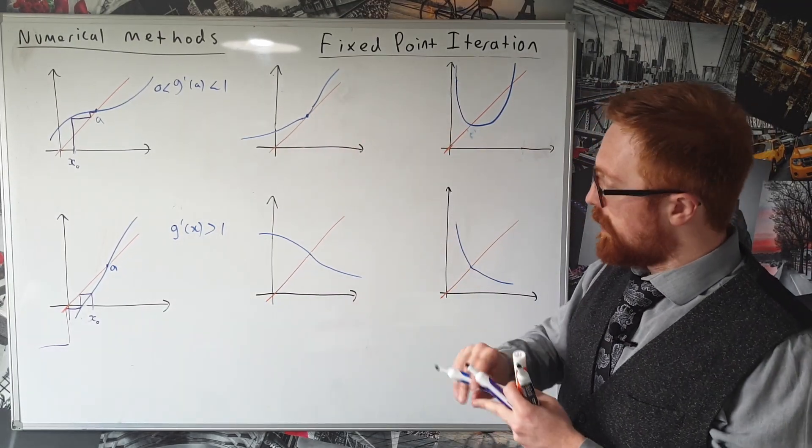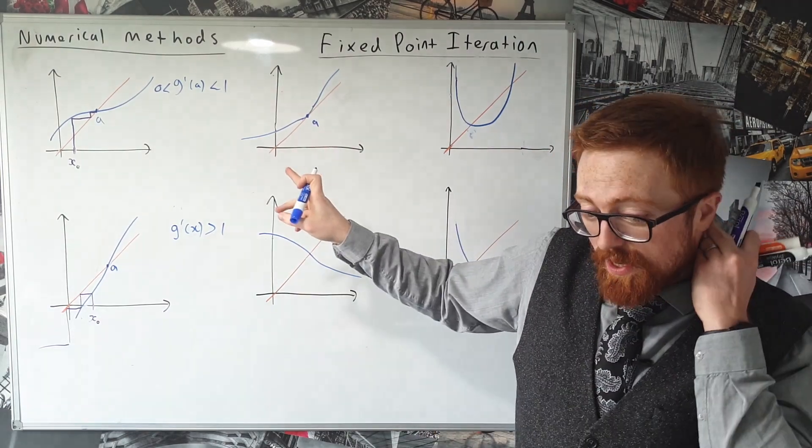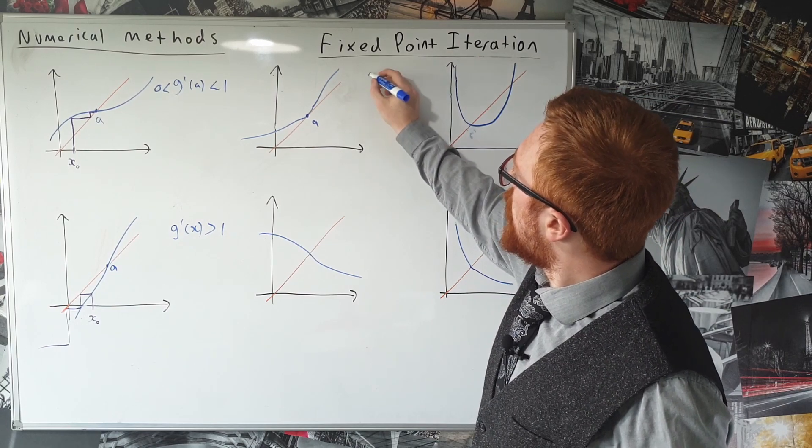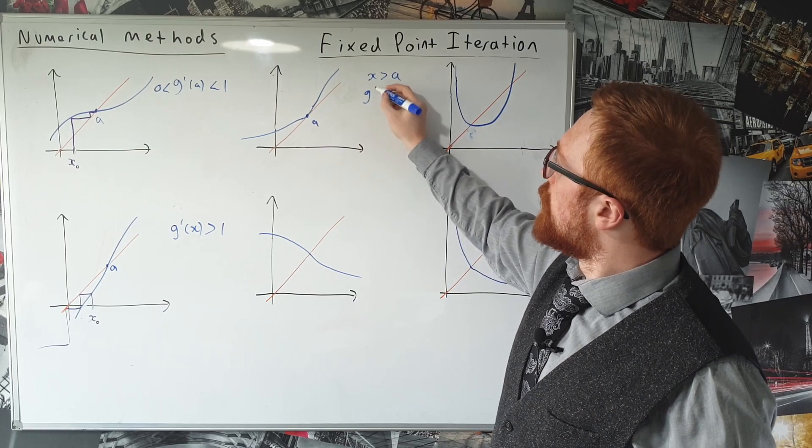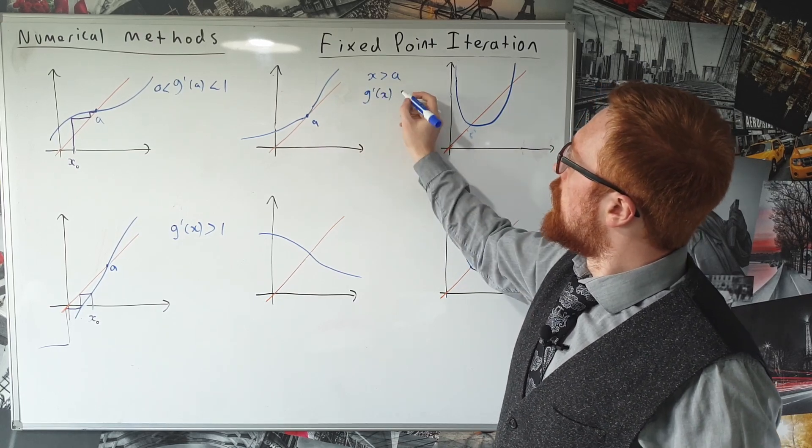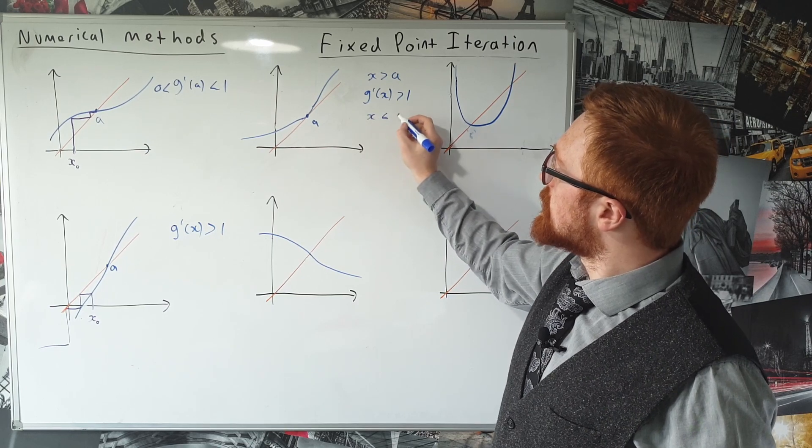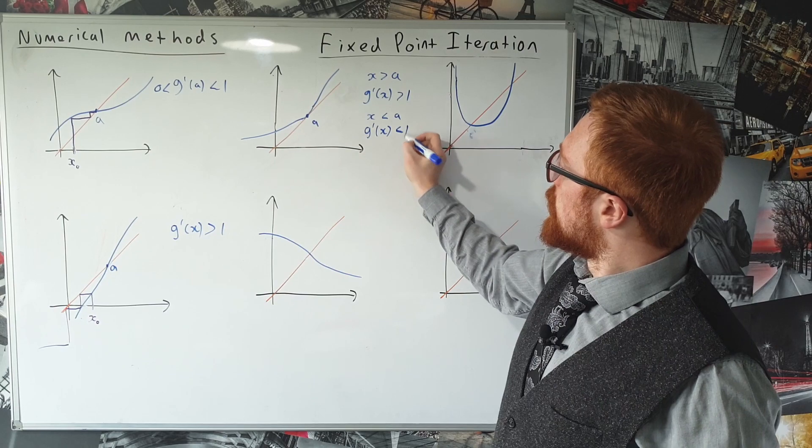Okay, let's have a look at this one. So if we call this point A again, well this one's quite interesting, this one's a little bit more interesting, because if x is greater than A, so on this side of the curve, well the gradient of x is bigger than 1. But if x is less than A, then the gradient of the curve is less than 1.